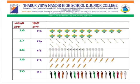अंग्रेजी में 19, हिंदी में १९ (unnees). कुल पेंसिलें? 1, 2, 3, 4, 5, 6, 7, 8, 9, 10, 11, 12, 13, 14, 15, 16, 17, 18, 19. कुल 19 पेंसिलें। अंग्रेजी में 20,